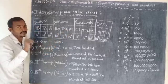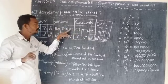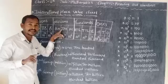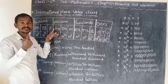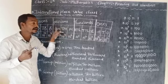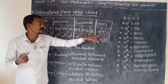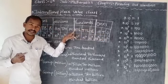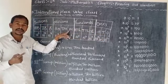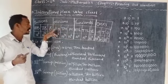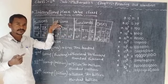In the millions group the places are: one million, ten million, hundred million. Notice the pronunciation pattern: one, ten, one hundred — same as ones; one thousand, ten thousand, hundred thousand — same pattern; one million, ten million, hundred million. So the third group is millions, with 3 places.